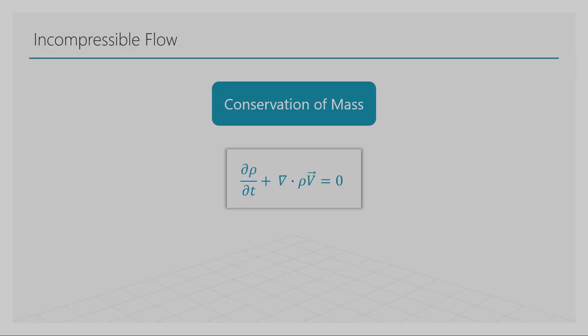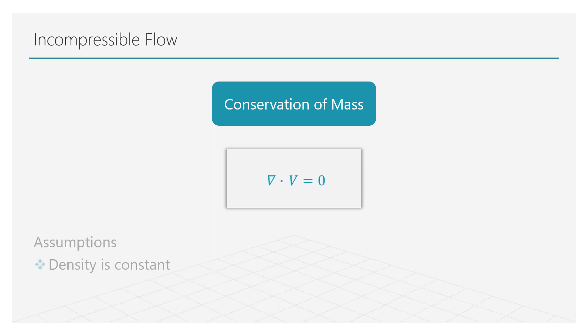Let us recall the conservation of mass equation. Because of the assumption of constant density, this equation now transforms into the following form. This is the mass conservation equation for incompressible flows.